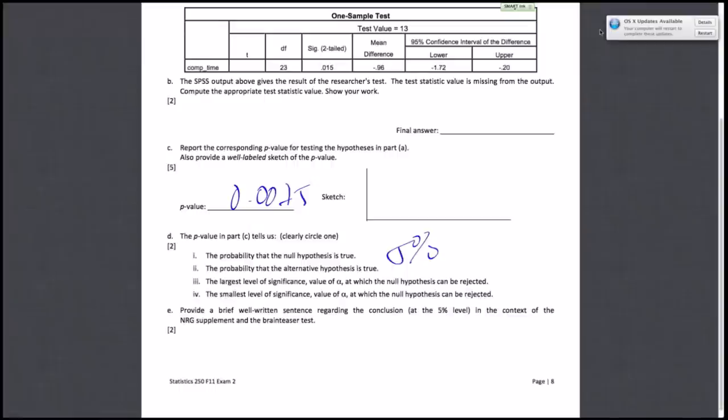Once you reject the null hypothesis, write that there is sufficient evidence to conclude that the energy supplement does improve performance time on average. When you reject the null, you accept the alternative hypothesis, which is that mu is less than 13. That's it.